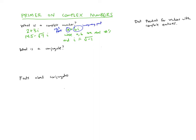The part bi is called the imaginary part. The conjugate of a complex number is obtained by switching the sign of the imaginary part. For example, the conjugate of 2 + 3i is 2 − 3i, and the conjugate of 14.5 − √7 i is 14.5 + √7 i. Conjugates are often written with a bar above them — so if z = 5 + 2i, then z-bar, the conjugate of z, is 5 − 2i.